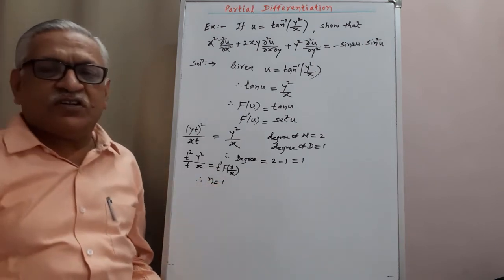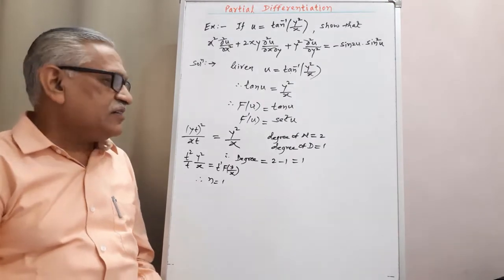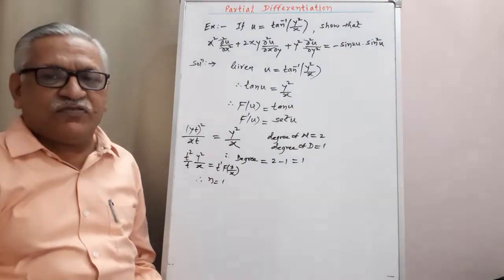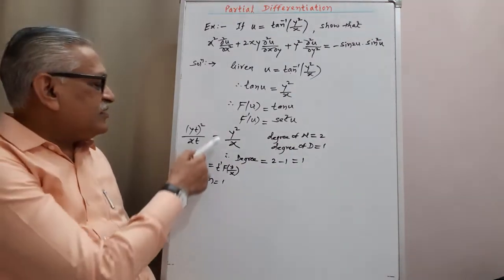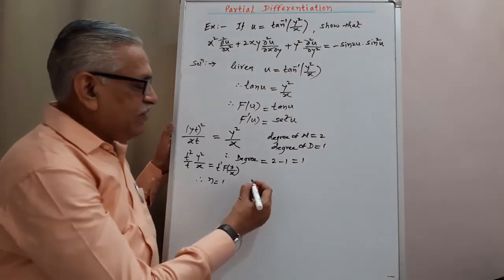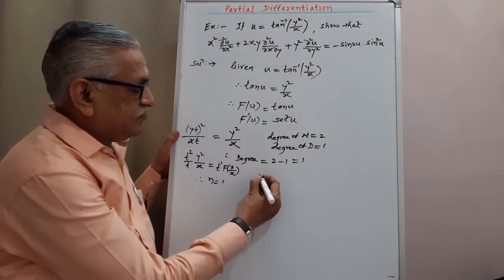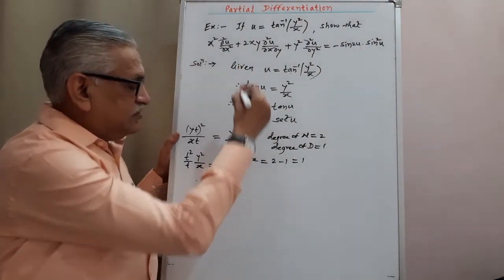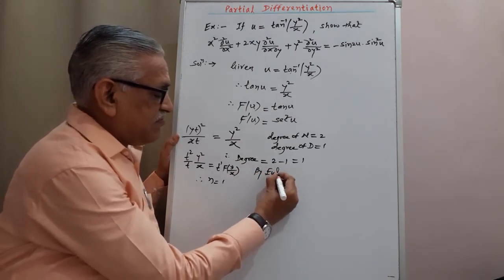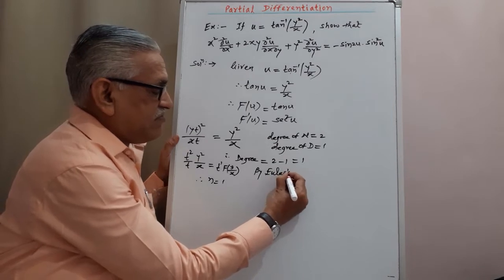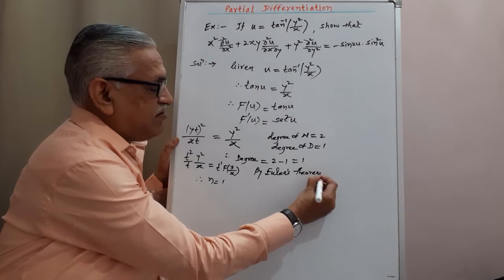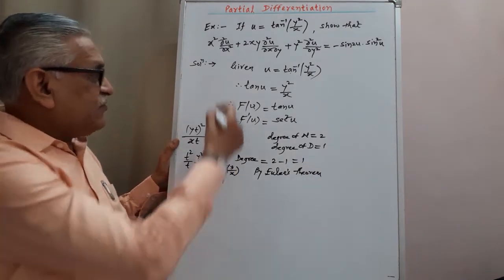By this way also, we can determine the degree of numerator and denominator. Then, by Euler's theorem, we have the result for this.